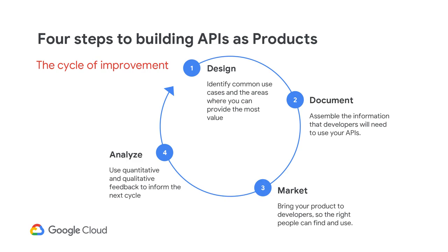Next, take a look at the needs of your application developers who will create the experience for your customers. They need a way to get started quickly with your API product. That's why documentation is so important. But documentation alone is not enough — make it easy for your developers to discover your APIs, say through an Apigee developer portal. The documentation makes the APIs accessible. And finally, review the analytics to determine what works well and what needs improvement, then continue to iterate to improve your API products.